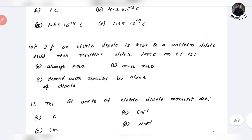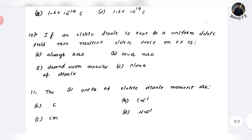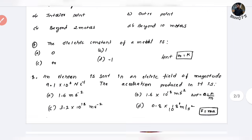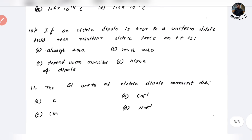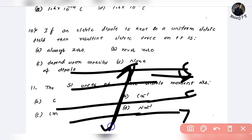If an electric dipole is kept in a uniform electric field, the resultant electric force on it is — the net force is always zero. Because the dipole has equal and opposite charges in a uniform field, the forces cancel. So the answer is always zero.